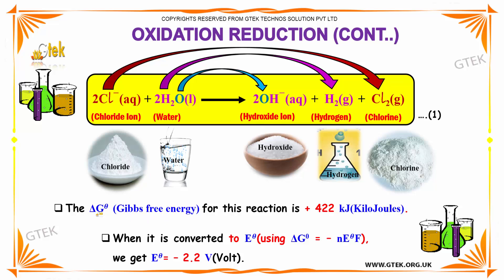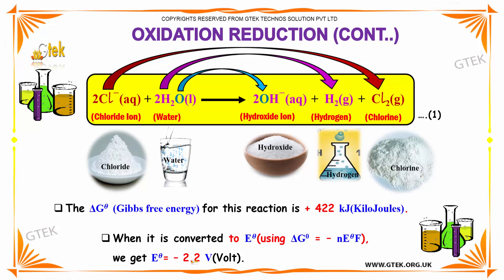The Gibbs free energy, delta G theta, for this reaction is plus 422 kilojoules. When converted to E theta using delta G theta equals minus n times E theta times F, we get E theta equal to minus 2.2 volts.